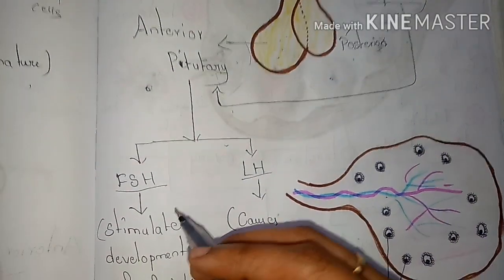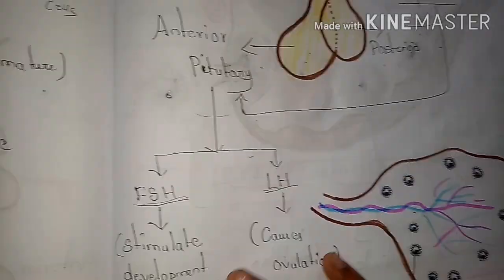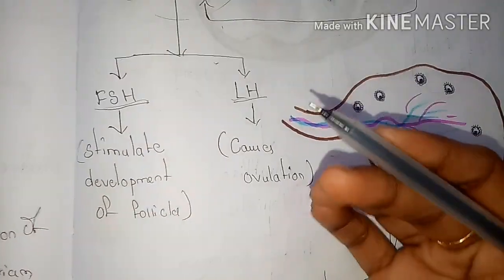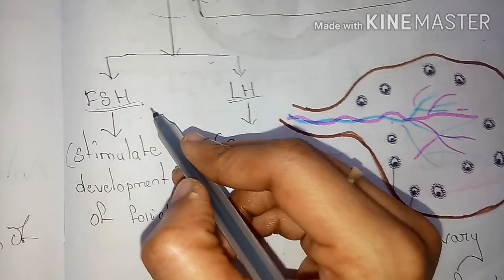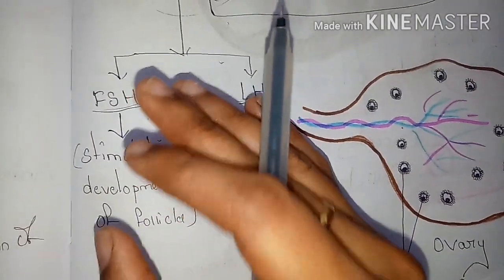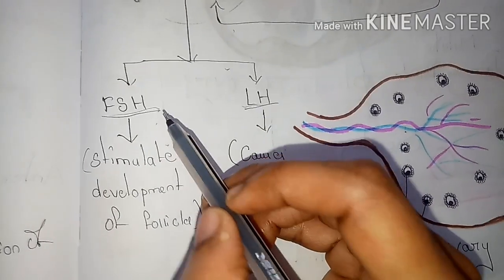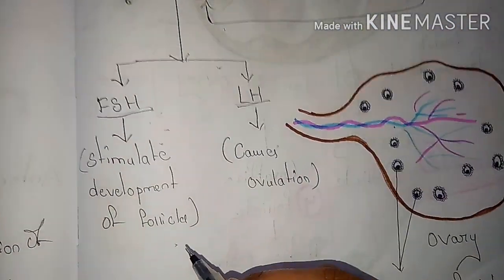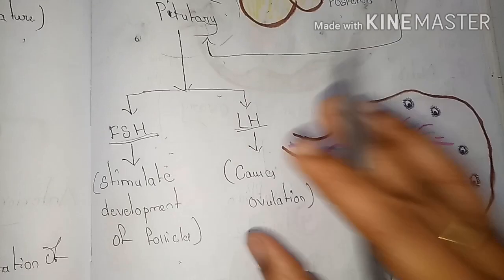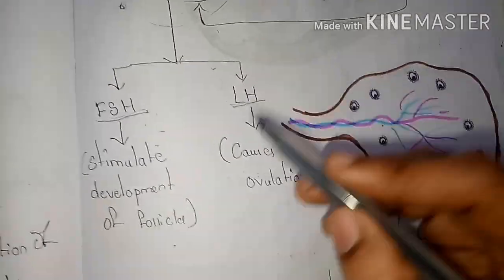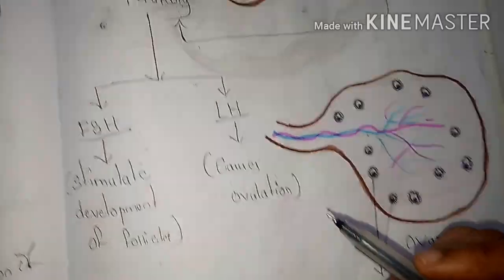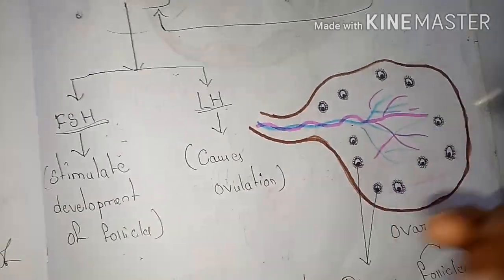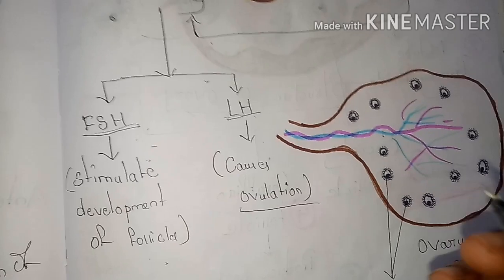After activation of the anterior pituitary gland, it liberates follicle stimulating hormone (FSH) and luteinizing hormone (LH). The follicle stimulating hormone, as its name suggests, plays a major role in stimulating and developing the follicles in the ovary. The luteinizing hormone plays a major role in causing ovulation in the ovary.